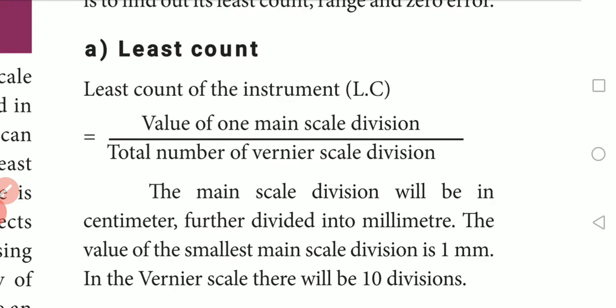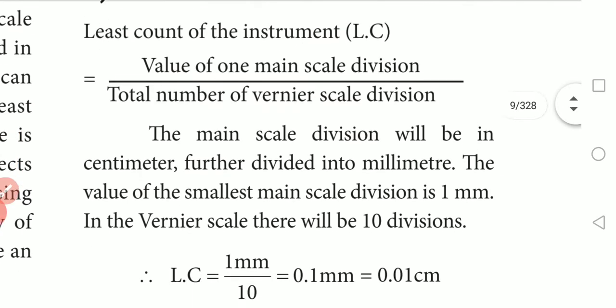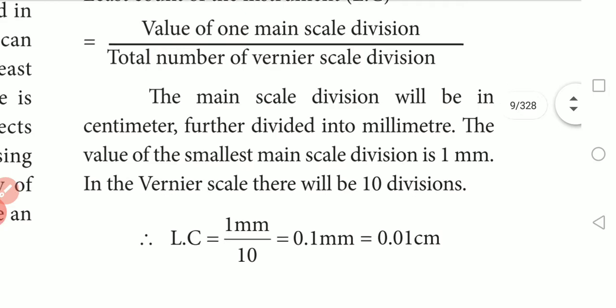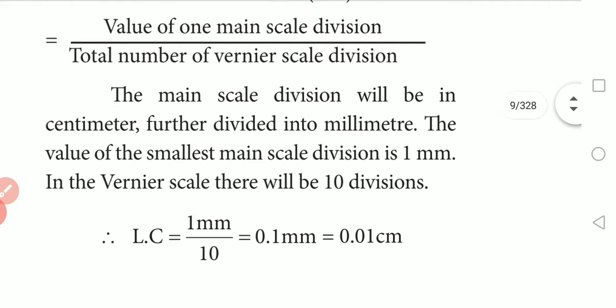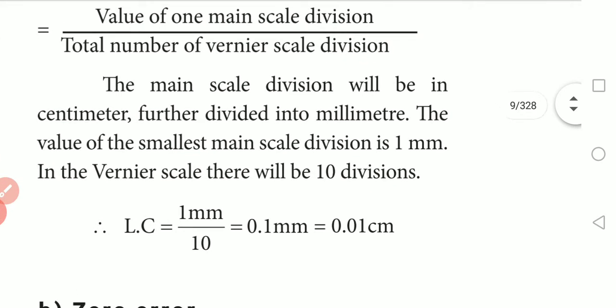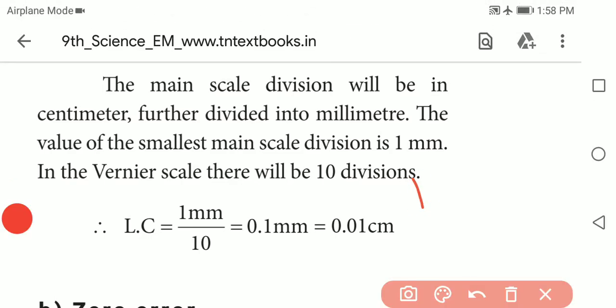The least count is calculated as the value of 1 main scale division divided by the total number of vernier scale divisions. The value of 1 main scale division is 1 millimeter. The vernier scale has 10 divisions.